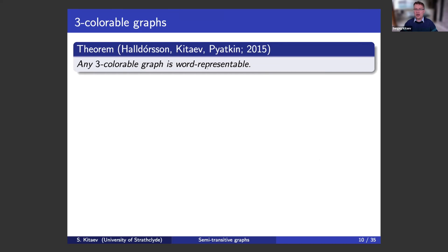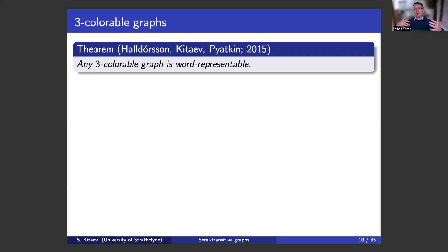Any pre-colorable graph is word-representable. This is a theorem which is important because in the theory of word-representable graphs or semi-transitive graphs, pre-colorable graphs are not interesting at all. So if in your own research area you have some class of graphs and you would like to see if they are semi-transitive or not, the very first question you should ask yourself is: are my graphs pre-colorable or not? If they are pre-colorable, then you stop right there, because all of them are semi-transitive.